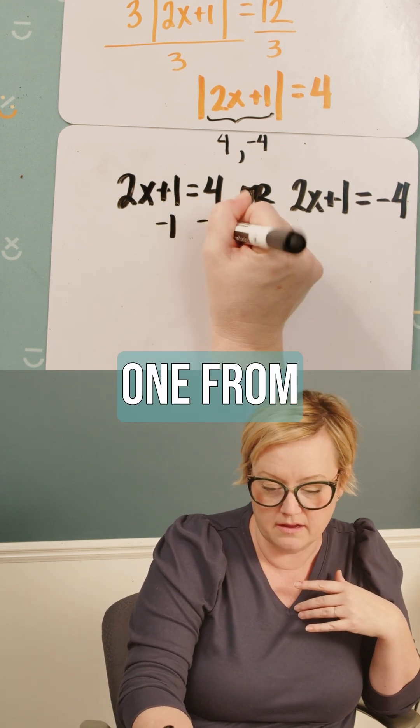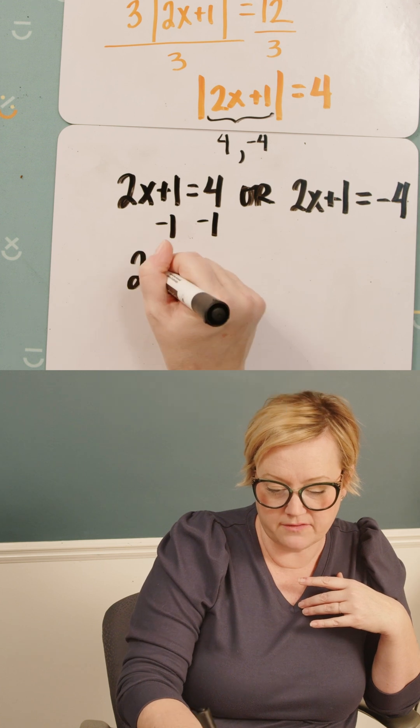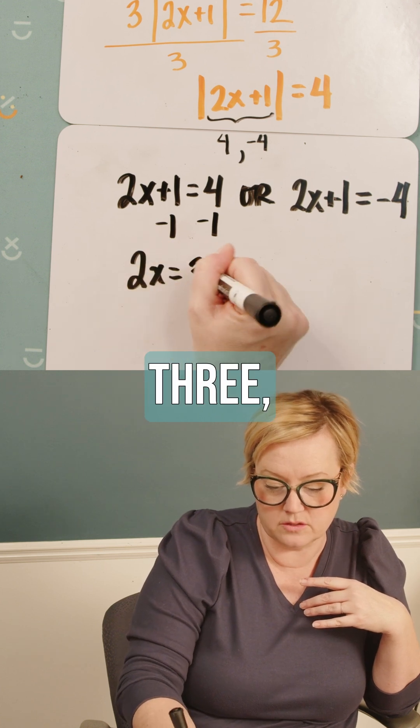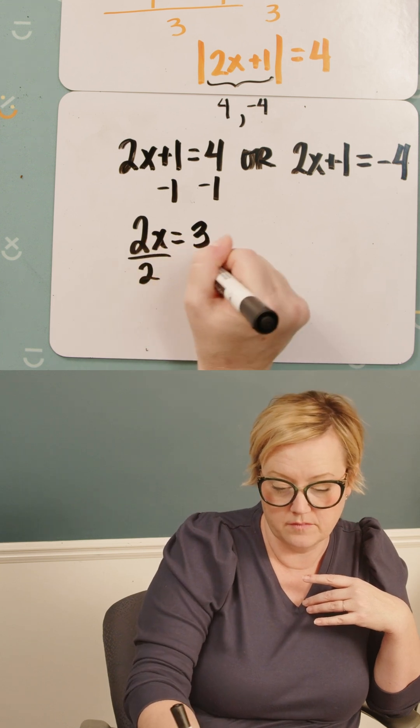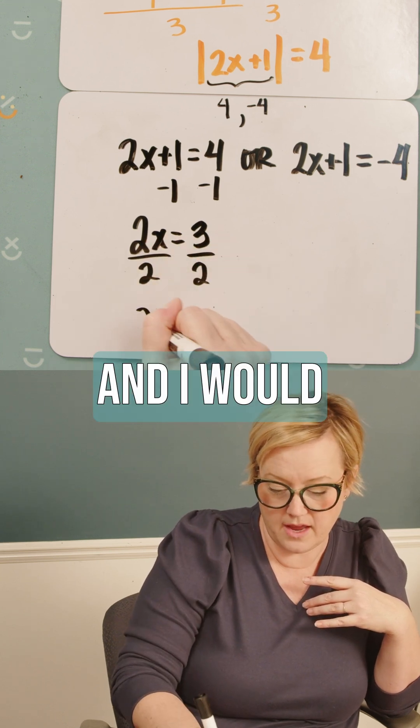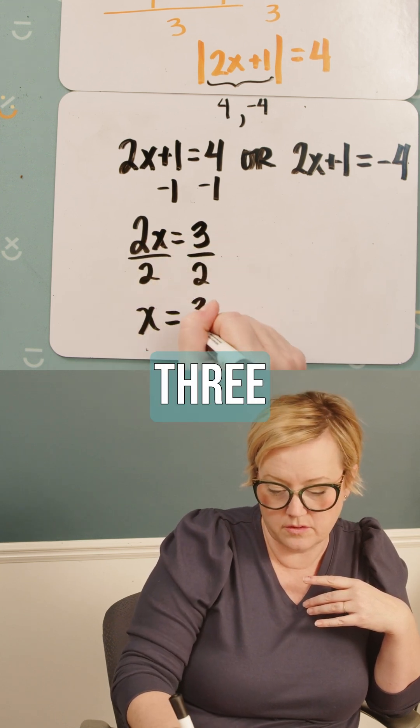So if I subtract one from both sides, I've got 2x equals three. And then I would divide by two. And I would get x equals three over two.